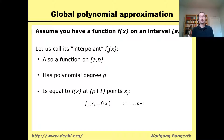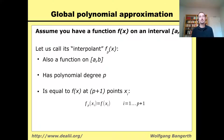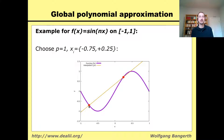As an interpolant, fp(x) equals f(x) at p plus one points. For example, for a linear function used to approximate f(x), it must equal f at two points. If I take the function sin(πx) on the interval minus one to one — that's the purple curve — and choose two points, say minus 0.75 and plus 0.25, then the orange-yellow curve is the interpolant, the approximation of the purple curve, equal to it at the two red-marked points.